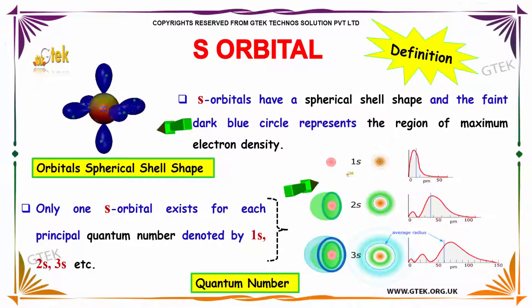Only one S-orbital exists for each principal quantum number denoted by 1s, 2s, 3s, etc.